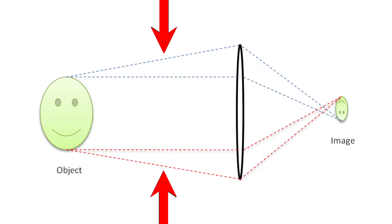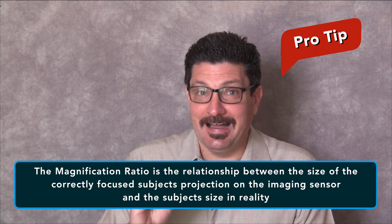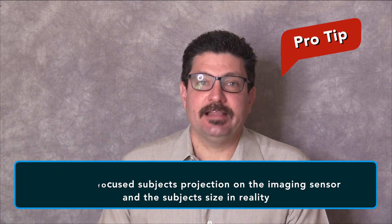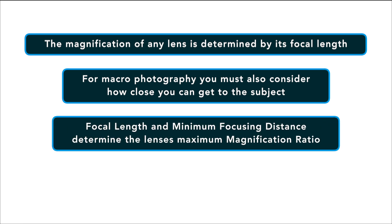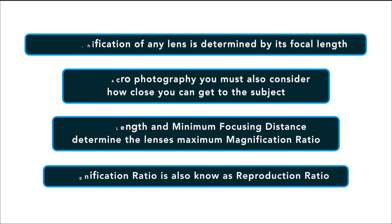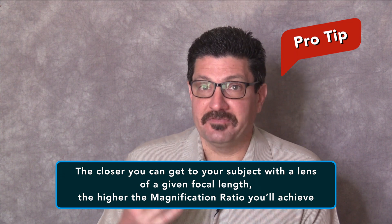Every point in a given scene reflects light rays. The front element of the camera captures these light rays and then focuses them onto the imaging sensor, producing a projection of the scene at the location of the sensor. Magnification, or more precisely the magnification ratio, is simply the relationship between the size of the correctly focused subject's projection on the imaging sensor and the subject's size in reality. The magnification of any lens is determined by its focal length. For macro photography, we are also concerned with how close we can get to our subject. These two factors — focal length and minimum focusing distance — determine the lens's maximum magnification ratio, sometimes referred to as the reproduction ratio. The closer you can get to your subject with a lens of a given focal length, the higher the magnification ratio you'll achieve.